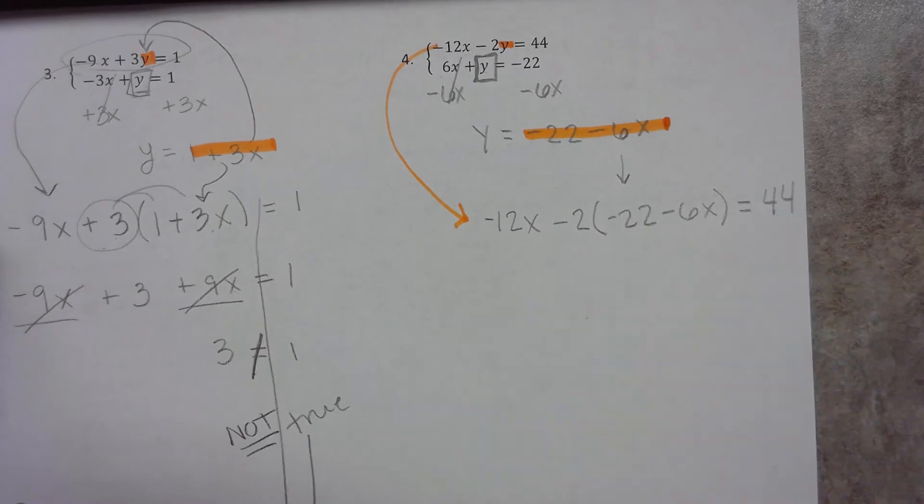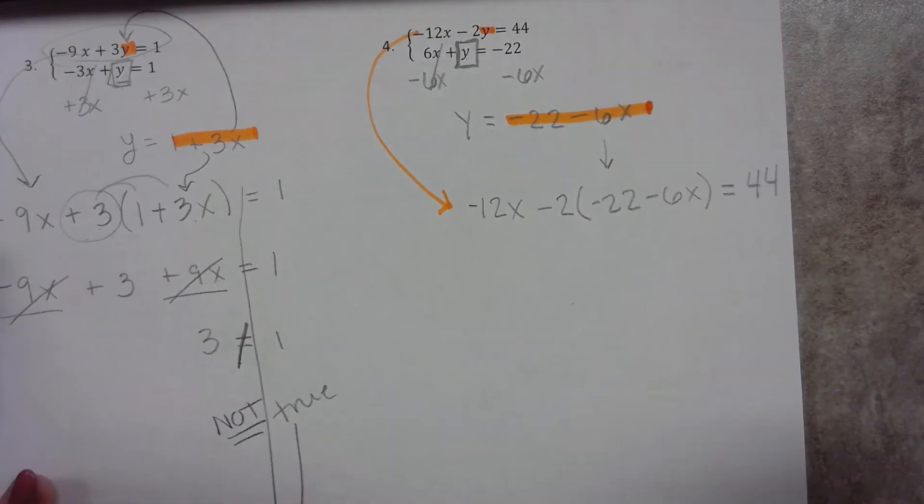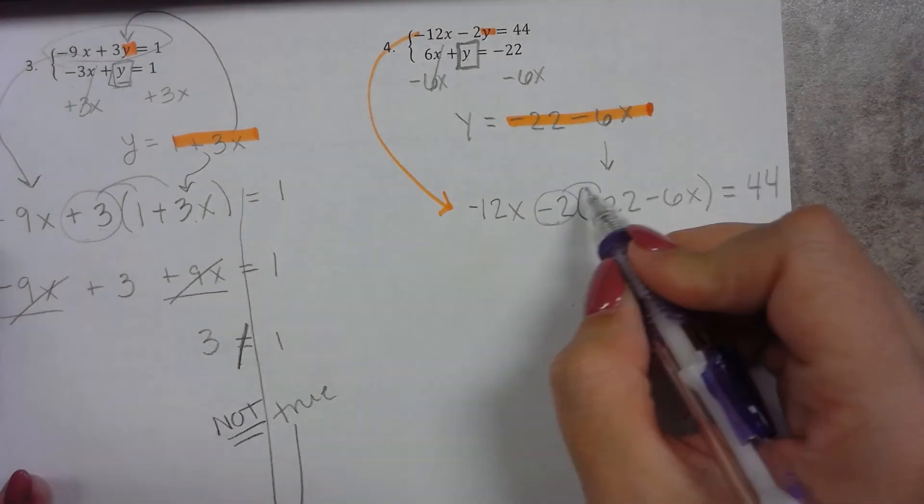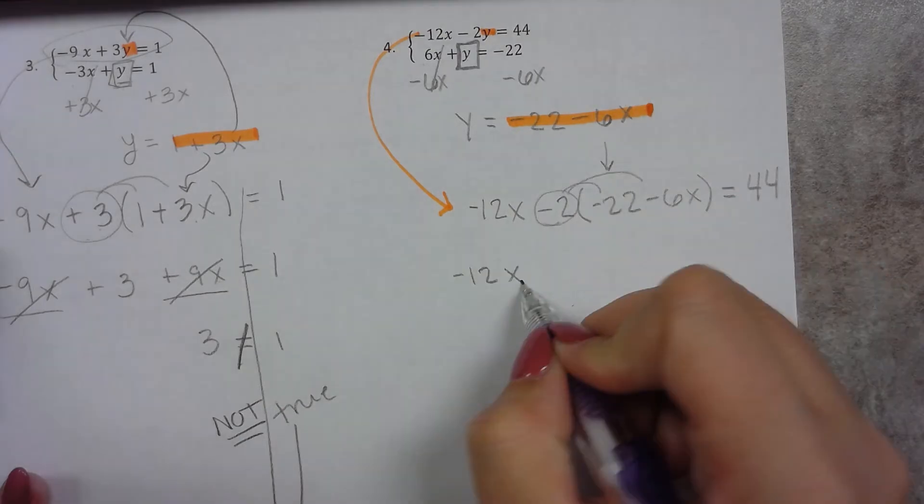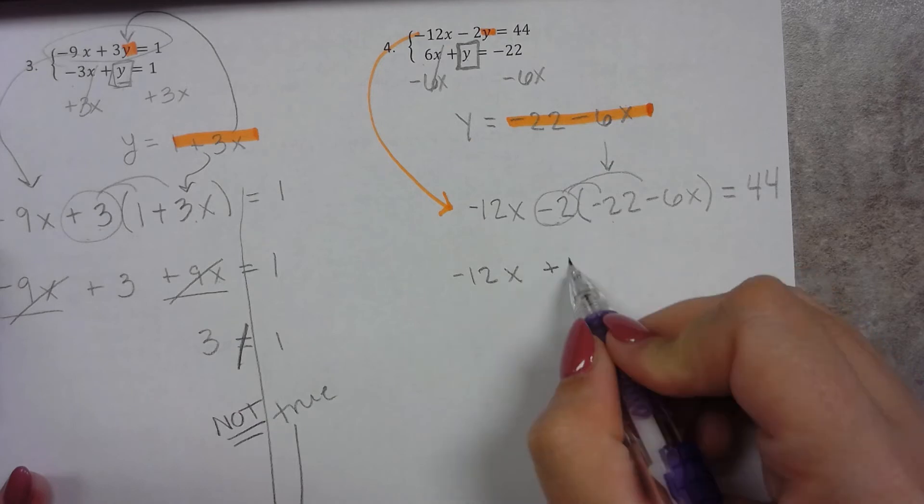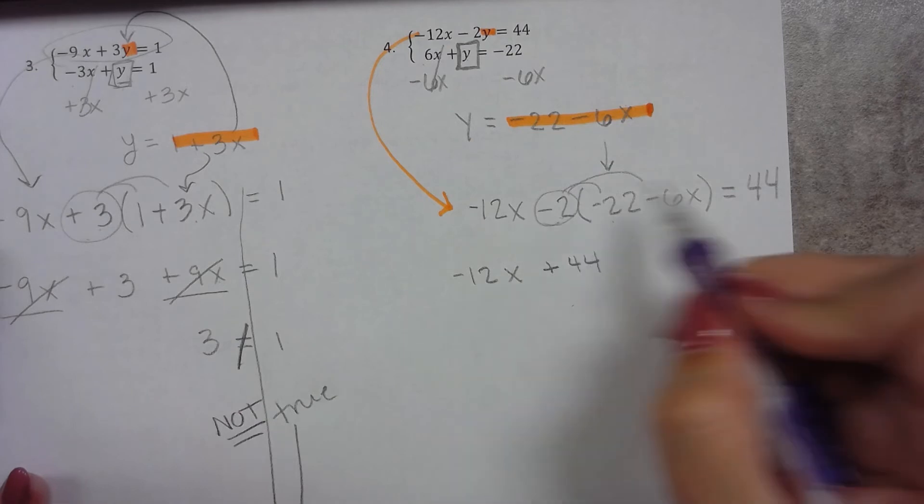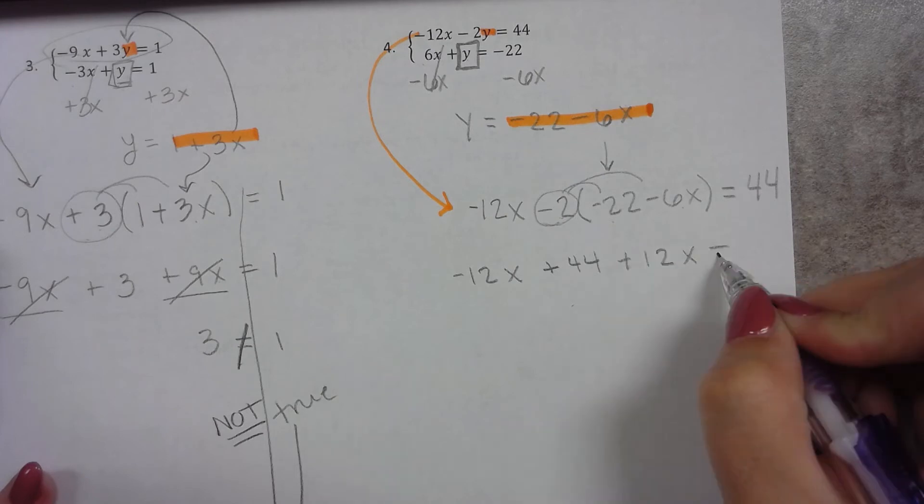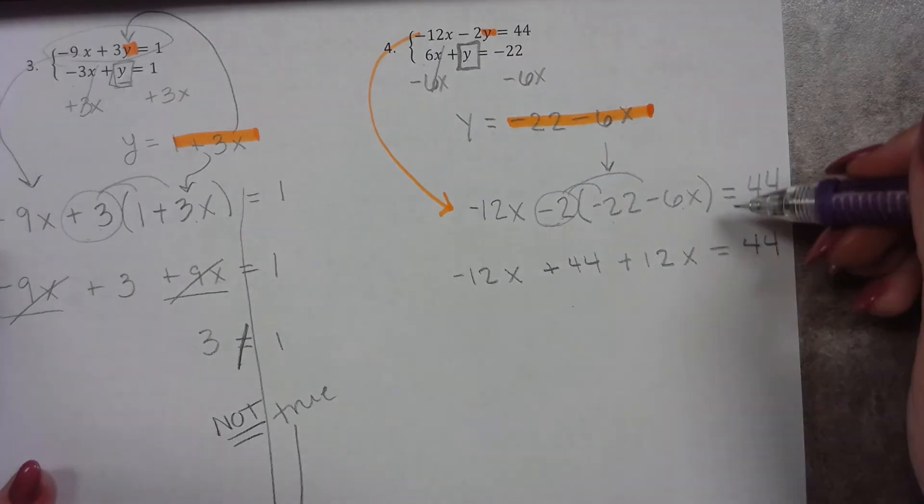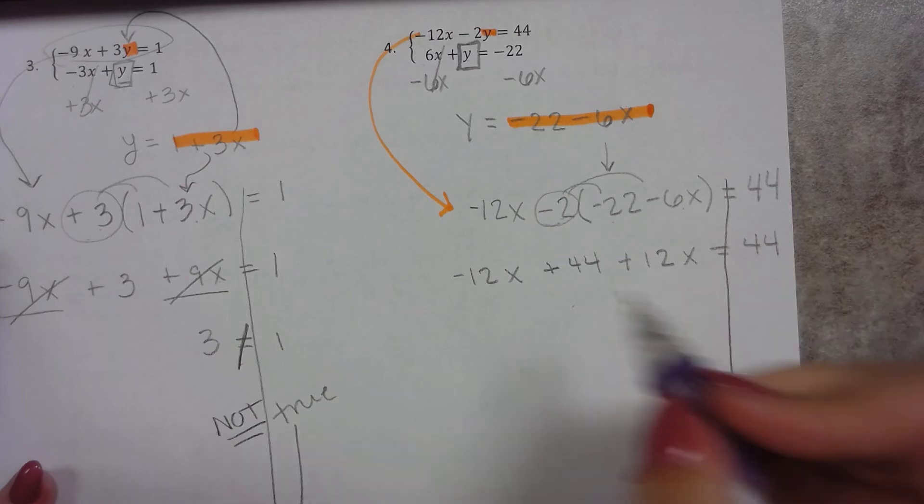Then I have to distribute, we got to distribute this negative 2. So we have negative 12x, negative 2 times negative 22 is positive 44. Negative 2 times negative 6x is positive 12x equals 44. Now remember, now I'm going to combine like terms. So I've got negative 12x, positive 12x, those cancel just like they did over here with the nines.